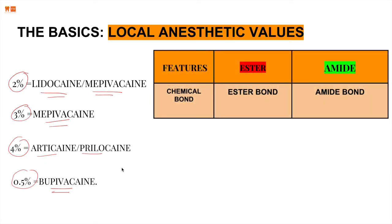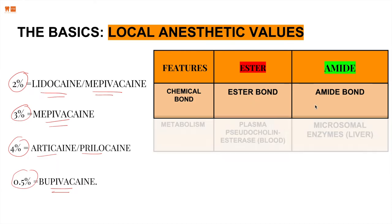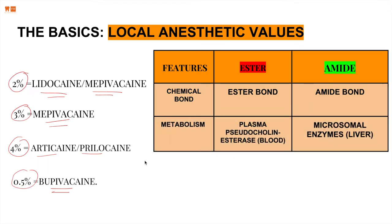A quick revision of local anesthetic terminology: there are two types — esters and amides. An ester has an ester bond in its chemical formulation, and an amide has an amide bond. The key difference is in metabolism. Esters are metabolized by plasma cholinesterase, an enzyme located in the blood. Amides are metabolized in the liver using microsomal enzymes. That's a big difference to remember, as these points are asked on exams.